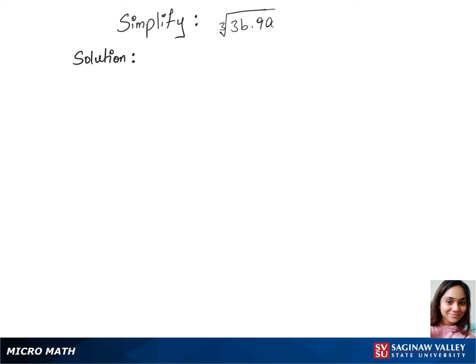We'll simplify this question by first multiplying the numbers under the cubic root. Let's do that by writing cubic root of 9 times 3 is 27 times AB.